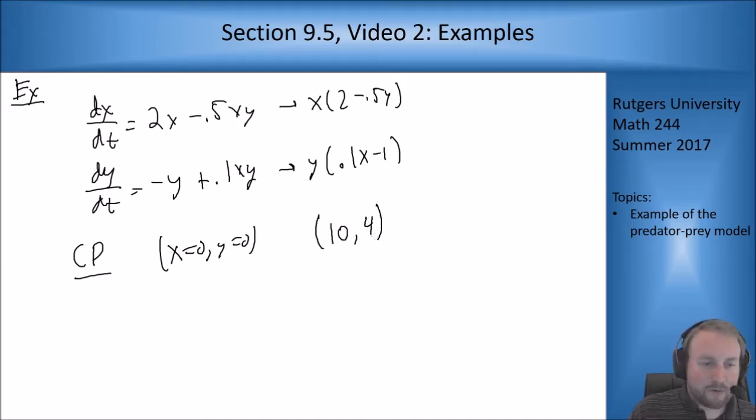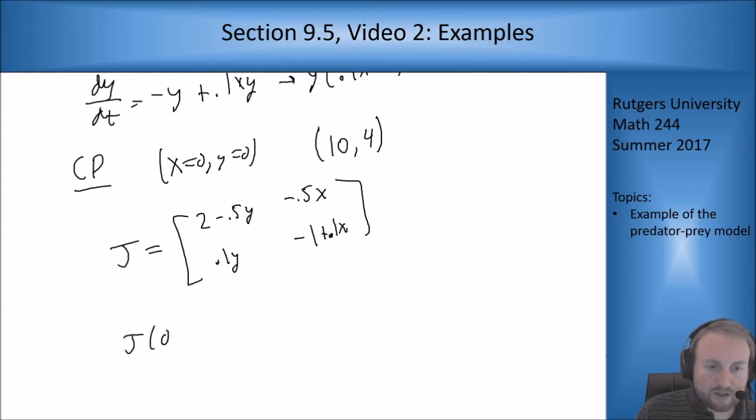Now let's calculate our Jacobian matrix. The Jacobian matrix in terms of x's and y's is [2 minus 0.5y, minus 0.5x; 0.1y, minus 1 plus 0.1x]. If I plug in the origin, J(0,0) is going to be [2, 0; 0, minus 1]. This is the saddle that I knew I was going to get at this point.